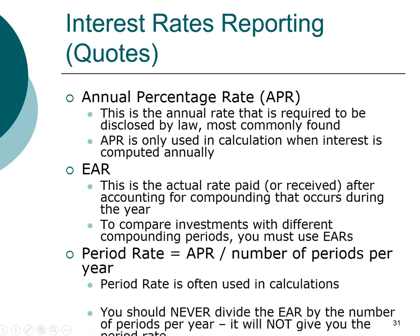One caution: you should never divide the EAR, or effective annual rate, by the number of periods per year. That's because the effective annual rate already takes into account compounding.